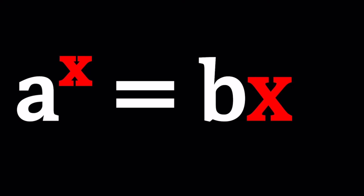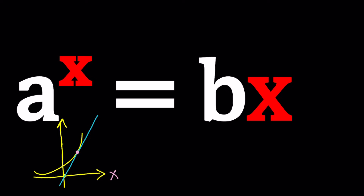First of all, I want to look at the graph of these two equations. a to the x is going to be an exponential, and bx is a line that goes through the origin. So in order for them to have a single solution, one of the scenarios I'm thinking about is that they can be touching each other at one point, which I call tangency. So that's going to be my main focus.